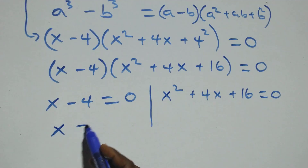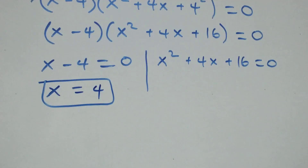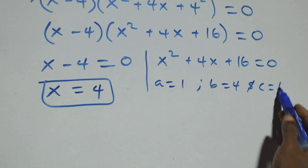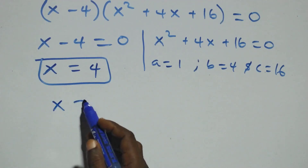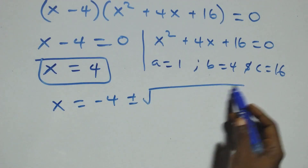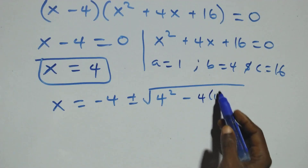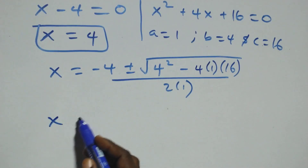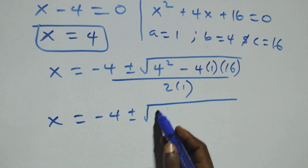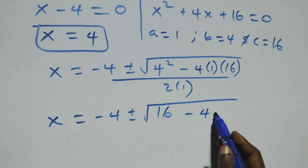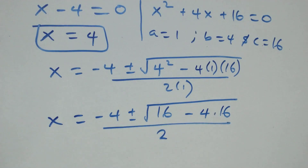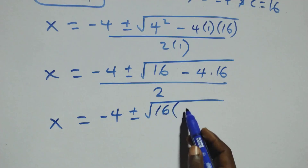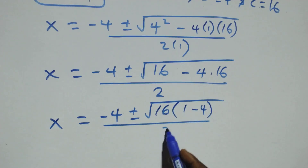Solving the first, x equals to 4, which is also a real solution. For the quadratic, a equals to 1, b equals to 4, and c equals to 16. Applying the quadratic formula, x equals to minus 4 plus or minus square root of 4 squared minus 4 times 1 times 16, over 2 times 1. That gives x equals to minus 4 plus or minus square root of 16 minus 64 over 2.